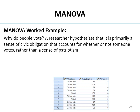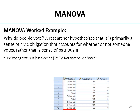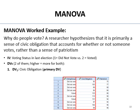This is what the data look like. Each person is a row. The first column is your independent variable — ones and twos for whether they voted or not. The next two columns are the DVs. Higher means more for both: a higher civic obligation score means a person feels more sense of civic obligation, same for patriotism. DV1 — the primary — is sense of civic obligation. DV2 — secondary — is patriotism.